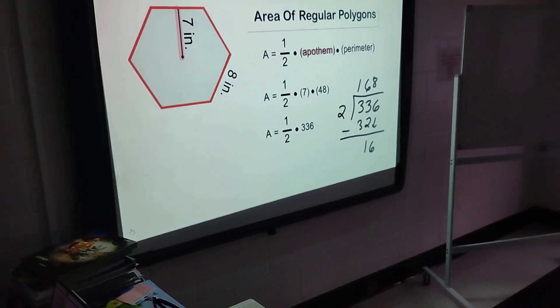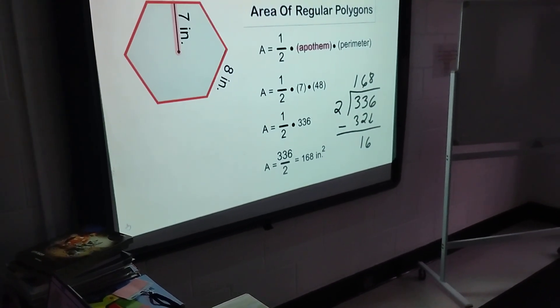Now we know that the area of our regular hexagon is 168 square inches.